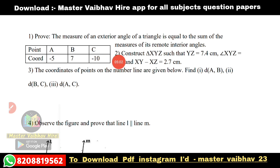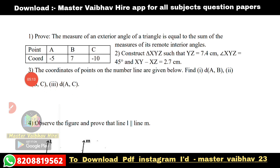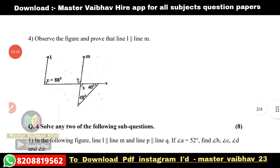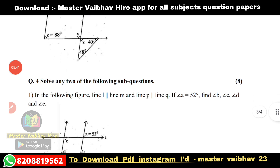Second: construct triangle XYZ such that YZ is equal to 7.4 cm, angle XYZ is equal to 45 degrees, and YZ minus XY is equal to 2.7 cm. Third: the coordinates of the points on the number line are given — find DA and DB, then DB and DC, then DA and DC. Fourth: observe the figure and prove that line L is parallel to line M.